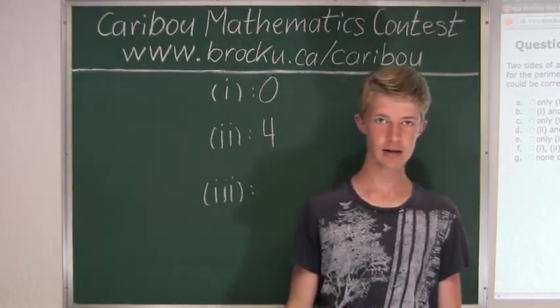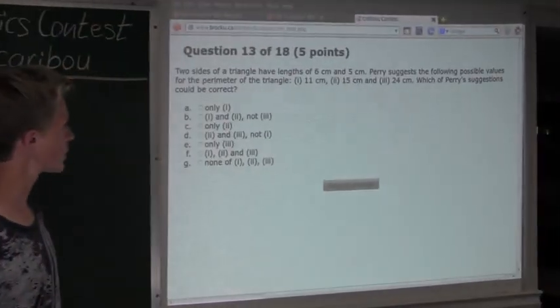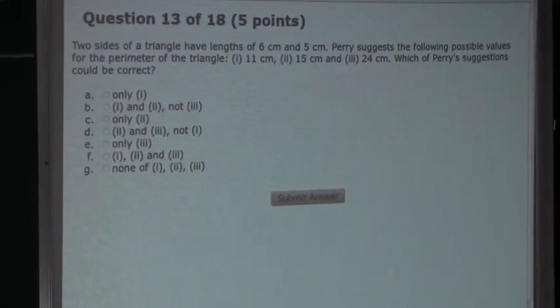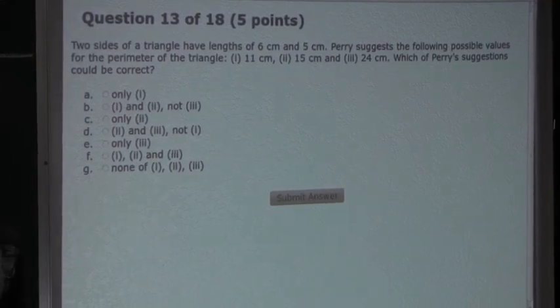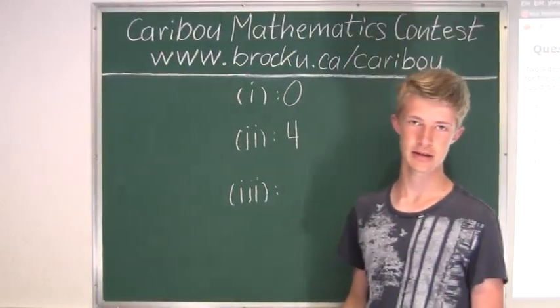Again we will use the same strategy and take the perimeter for Case III, which is 24 cm, and subtract the two side lengths. So 24 minus 6 is 18, and 18 minus 5 is 13. So the third side length for Case III would be 13 cm.